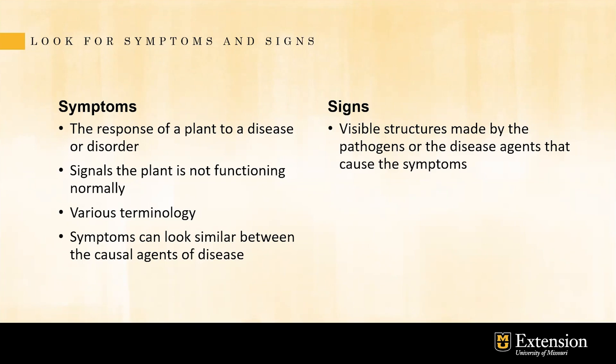Regarding signs, they are more specific to plant pathogens. Signs are visible structures made by the plant pathogens or disease agents that cause the symptoms. I want to point out that some environmental stresses, such as drought, chemical damage, or fertilizer burn, can cause symptoms, but there are no signs.